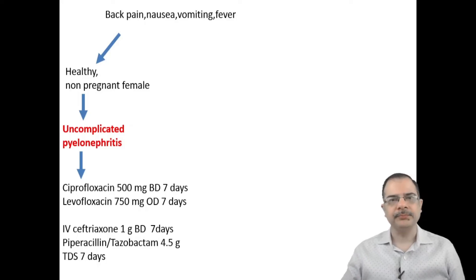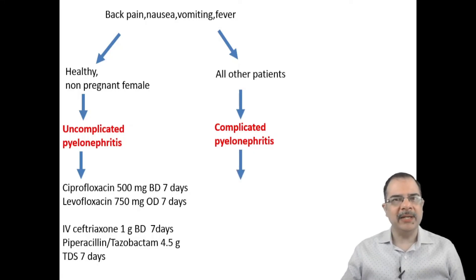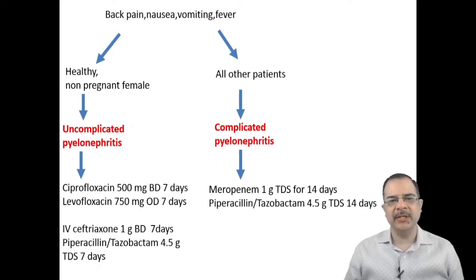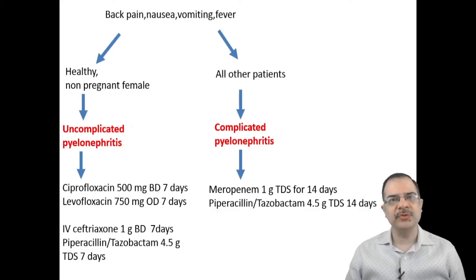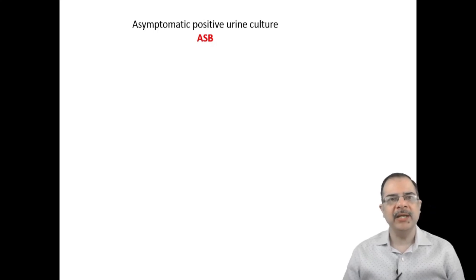All other patients with symptoms of pyelonephritis — such as males, immunocompromised patients, diabetics, or those with structural abnormalities — will be considered as complicated pyelonephritis. Urine culture should be done in all such individuals, and we can start empirical IV antibiotics: meropenem 1 gram three times a day for 14 days, or piperacillin-tazobactam 4.5 grams three times a day for 14 days.